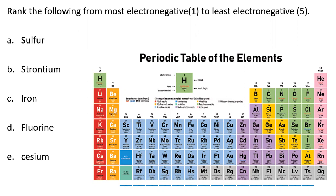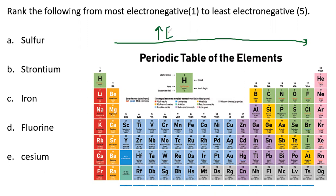For electronegativity, the general trend is it increases from left to right. As we go from left to right across a period, electronegativity increases. Nonmetals tend to have higher electronegativities than metals. And as we go down a group, electronegativity decreases.